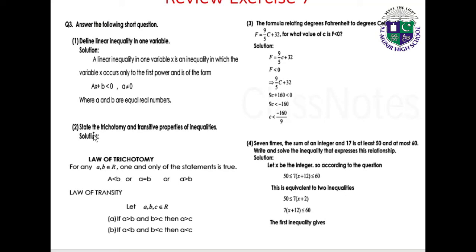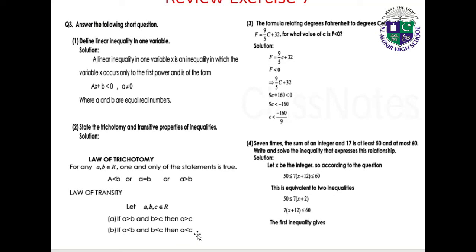Question 2: State the trichotomy and transitive properties of inequality. Law of Trichotomy: For any a, b, c in the real numbers, one and only one of the following statements is true: a less than b, a equals b, or a greater than b. Law of Transitivity: If a greater than b and b greater than c, then a greater than c. If a less than b and b less than c, then a less than c.